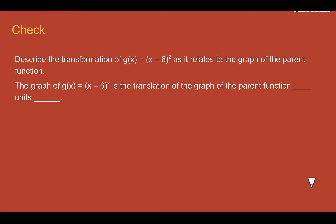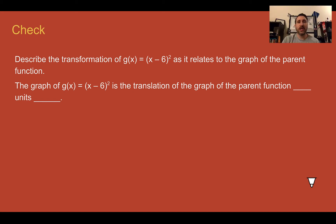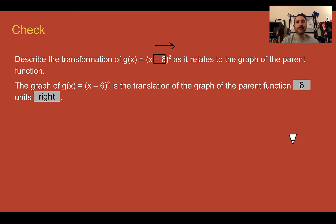Check your understanding: describe the transformation shown. Pause the video now and complete the check. Check your answer: this was shifted six units to the right. We see minus six, thinking maybe we'd go to the left, but we're actually going to the right — six units.